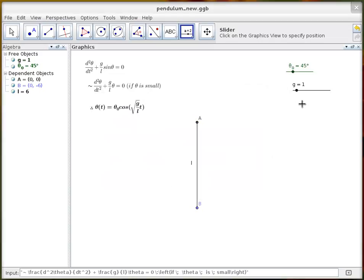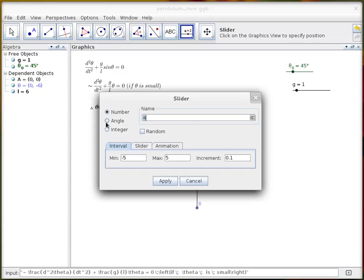Click apply and then finally we need to tell GeoGebra that it's something called time so I'll create a slider called T, make it run from zero to thirty.